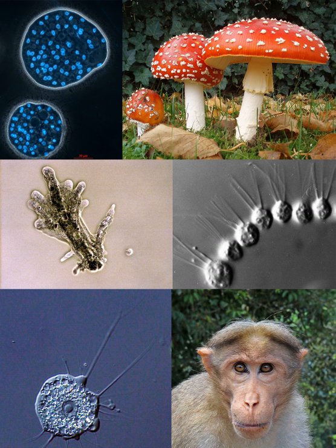Amoebozoa seems to be monophyletic with two major branches: conosa and lobosa. Conosa is divided into the aerobic infraphylum semiconosia, mycetozoa and variocea, and secondarily anaerobic archamoebae.